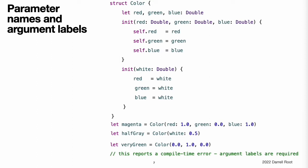Because of this, Swift provides an automatic argument label for every parameter in an initializer if you do not provide one. This example defines a structure called Color with three constant properties called red, green, and blue. These properties store a value between 0.0 and 1.0 to indicate the amount of red, green, and blue in the color. Color provides an initializer with three appropriately named parameters of type Double for its red, green, and blue components. Color also provides a second initializer with a single white parameter, which is used to provide the same value for all three color components.